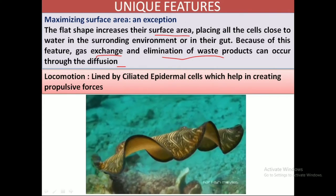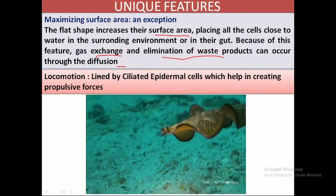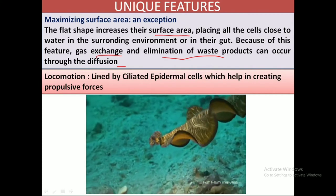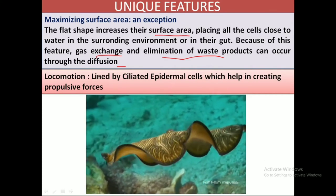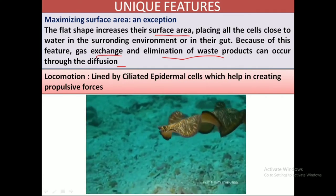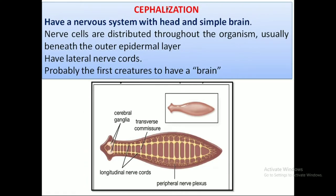Another feature is their unique locomotory patterns. These animals are provided with ciliated epidermal cells which help in creating propulsive forces, and their locomotory pattern is a trait worth noting. The other key feature is cephalization — the differentiation of the head. These are the first creatures to have an actual brain. Their nervous system resembles a ladder, with lateral nerve cords interconnected by thin thread-like structures known as commissures.